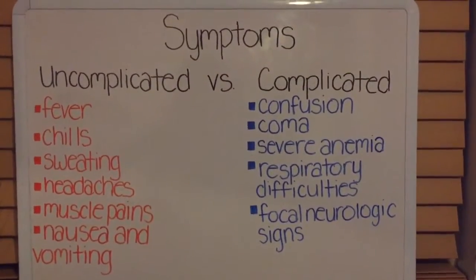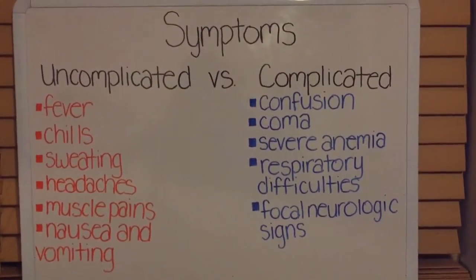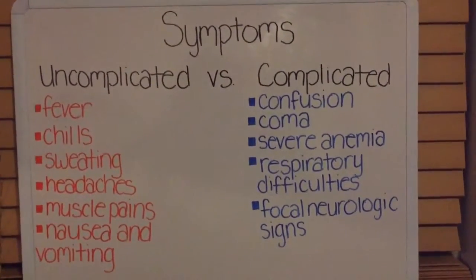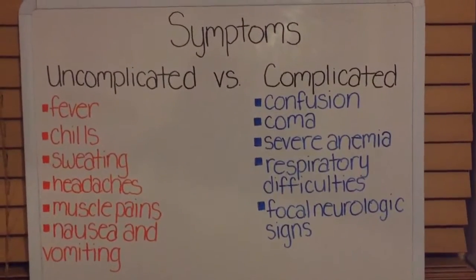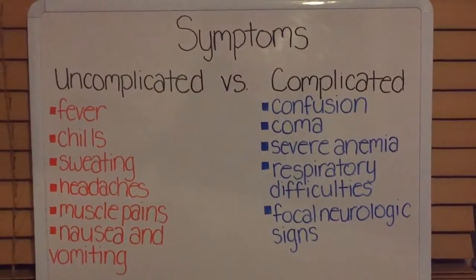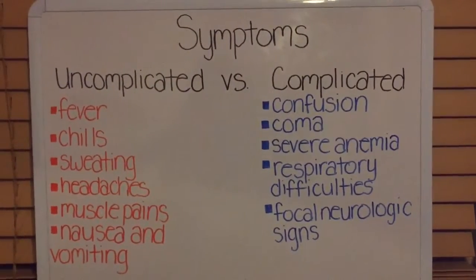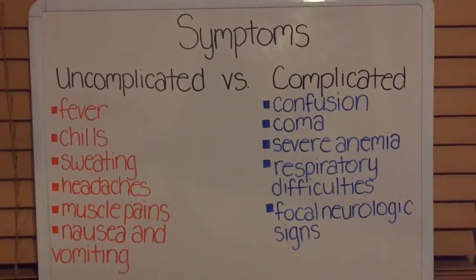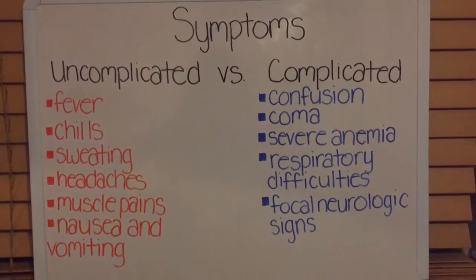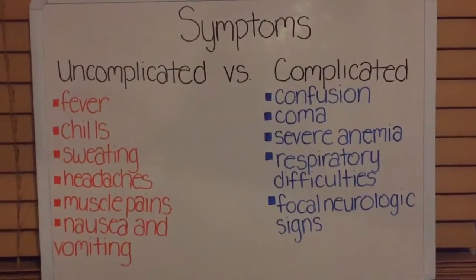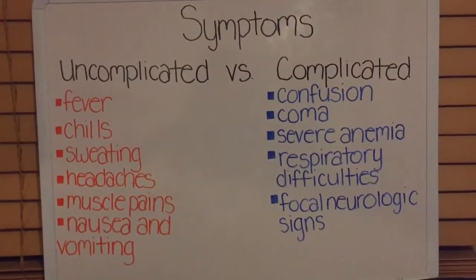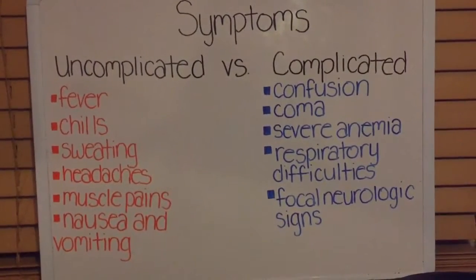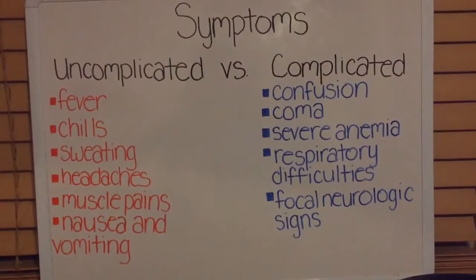Symptoms. Malaria has two different categories of symptoms: uncomplicated and complicated. The incubation period after an individual is bitten varies within 7 to 30 days, and the symptoms will appear within or after that time period. Uncomplicated malarial symptoms last within hours with treatment, whereas complicated symptoms are long-term and can lead to death.